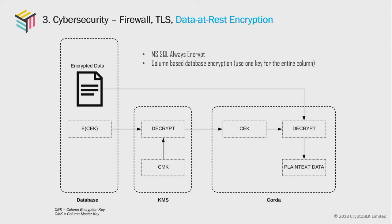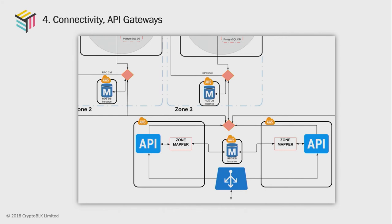The fourth challenge is functionality — specifically how to connect this Voltron trade finance system to the rest of the world. Without connectivity to the external world, this blockchain or DLT project can only be a toy; it can never be production-ready. We have an API gateway — actually a cluster of API gateways — built for both security and reliability considerations.